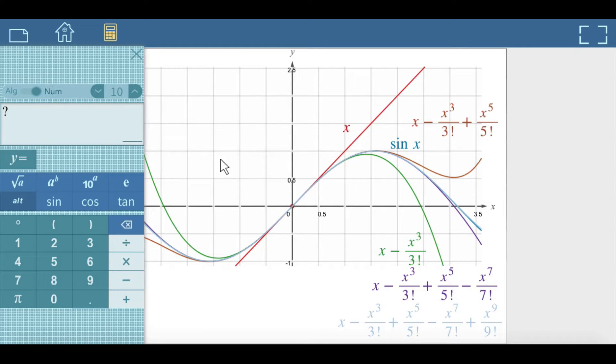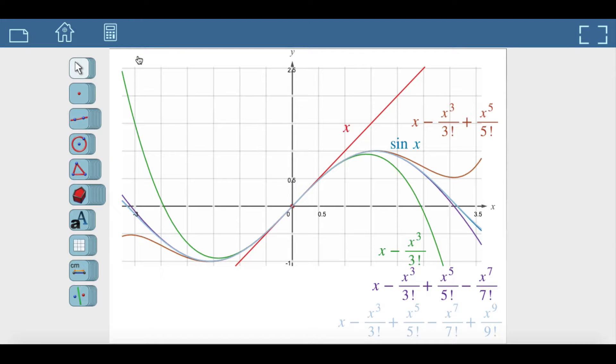The graph of the Taylor polynomial of degree 9 seems to be a good approximation of the function on interval minus pi, pi. But with what accuracy?